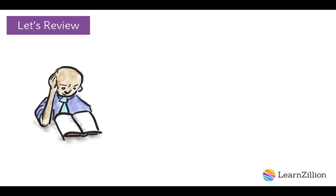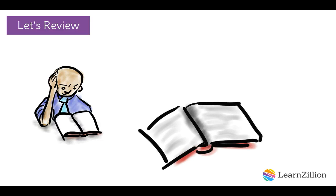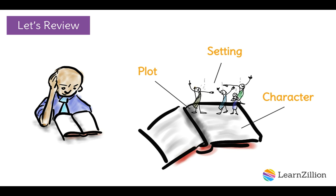Let's also review what we already know good readers do. Good readers are always going back to a text to close read and annotate words, phrases, and sections that stand out or are unclear to them so that they can develop a deeper understanding and analysis of the text. They are able to closely analyze how particular elements of a story or drama interact, such as how a story's setting might shape a character or a plot.